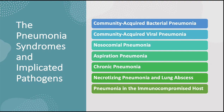Bacterial pneumonias are classified according to the specific etiologic agent, or if no known pathogen can be isolated, by the clinical setting in which the infection occurs. Altogether, seven distinct clinical settings are recognized, each associated with a fairly distinct group of pathogens: community-acquired bacterial pneumonia, community-acquired viral pneumonia, nosocomial pneumonia, aspiration pneumonia, chronic pneumonia, necrotizing pneumonia and lung abscess, and pneumonia in the immunocompromised host. Consideration of clinical settings can be a helpful guide when antimicrobial therapy has to be given empirically.